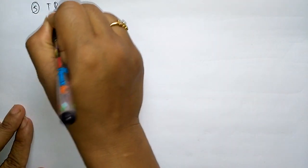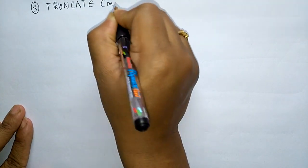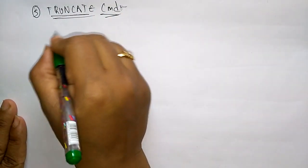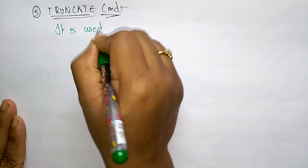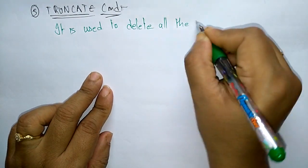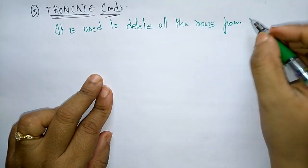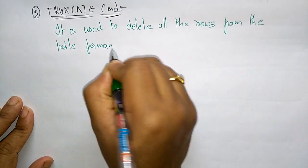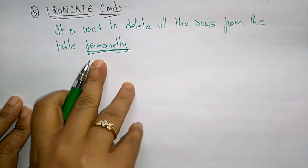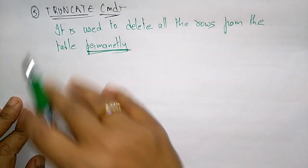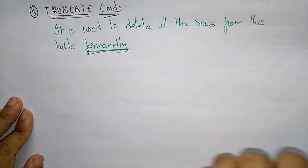Coming to the last Data Definition Language command — the fifth one is the TRUNCATE command. The main use of the TRUNCATE command is: it is used to delete all the rows from the table permanently. Once you use the TRUNCATE command, you can't undo it — you cannot roll back that command.